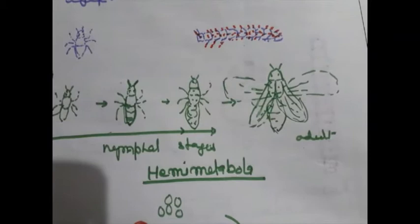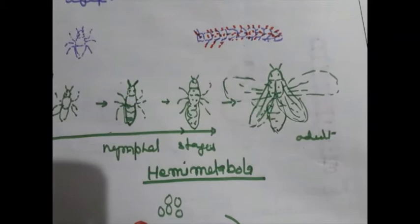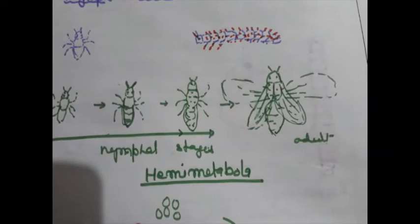In hemimetabolous insects, progressive development of wing buds occurs at each molt.